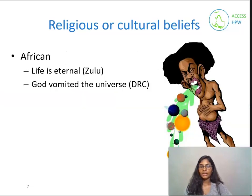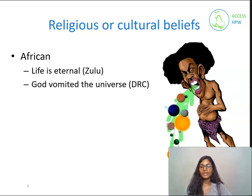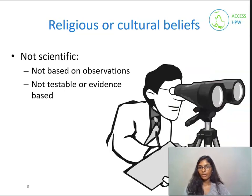In the Zulu culture, it is believed that the Ancient One was born out of the Sea of Reeds, after which he created everything that exists. He also passed on knowledge to the Zulu people, who believed that life is eternal. The Kalahari San believed that all life lived under the earth with the Great Master and Lord of all life, who had planned all that exists now. For the purposes of this course, we will not be focusing on these beliefs, because they are not based on observations, they are not testable and are not evidence-based.